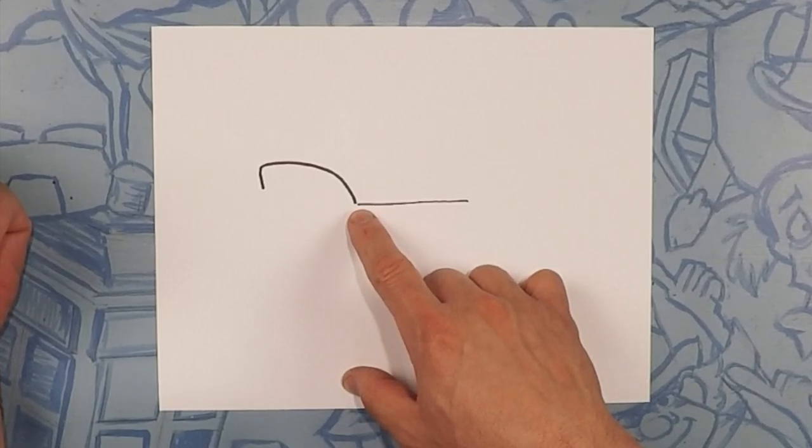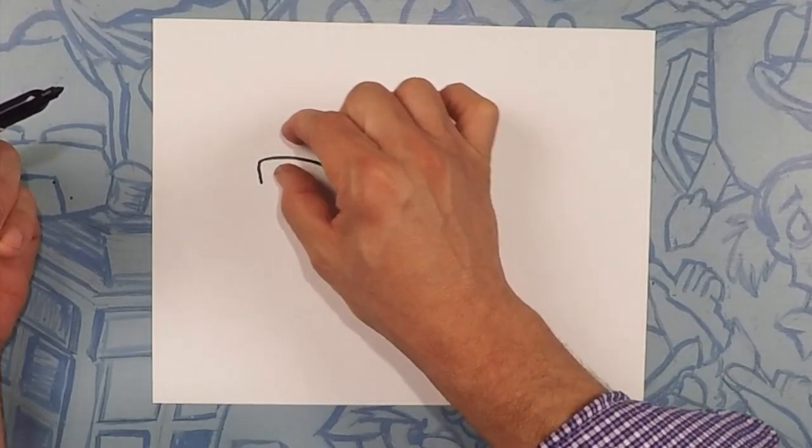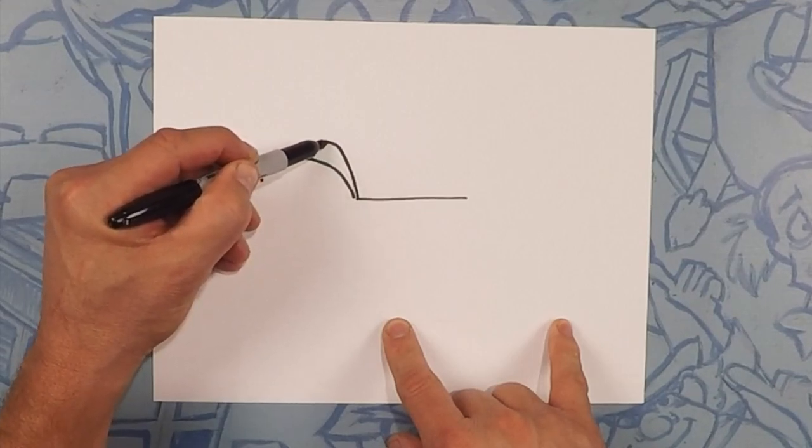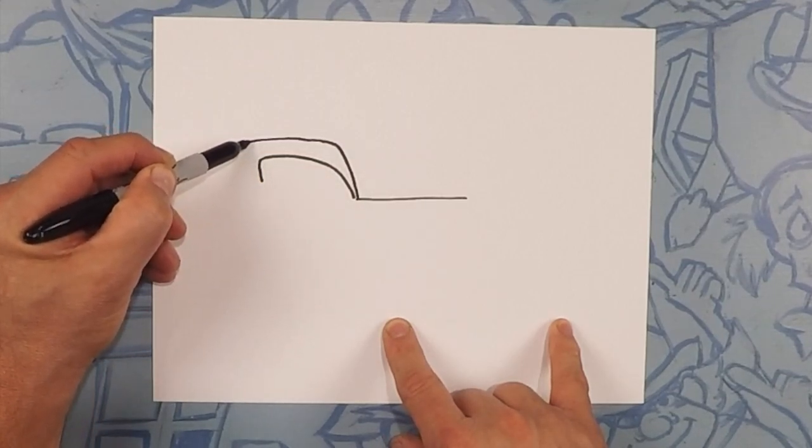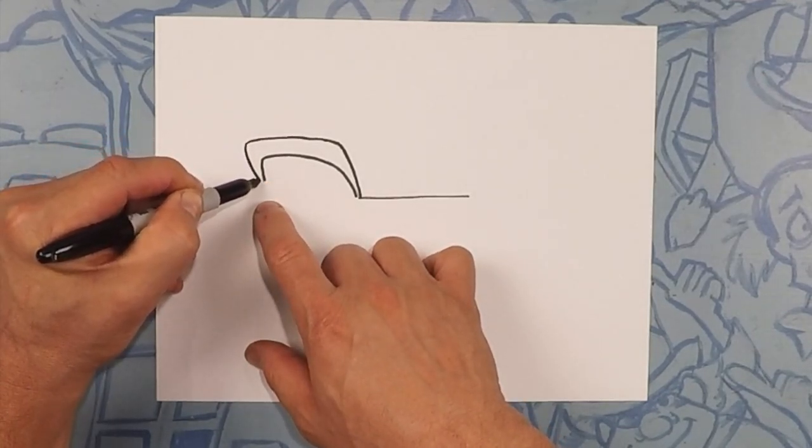What we're going to do next is we're going to draw the fender. So we're going to follow this line kind of giving it a little bit of thickness towards the front. So we're going to go up, kind of going up like this. Perfect and then we're going to close that off.